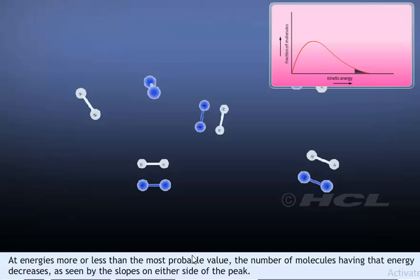At energies more or less than the most probable value, the number of molecules having that energy decreases, as seen from the slopes on either side of the peak.